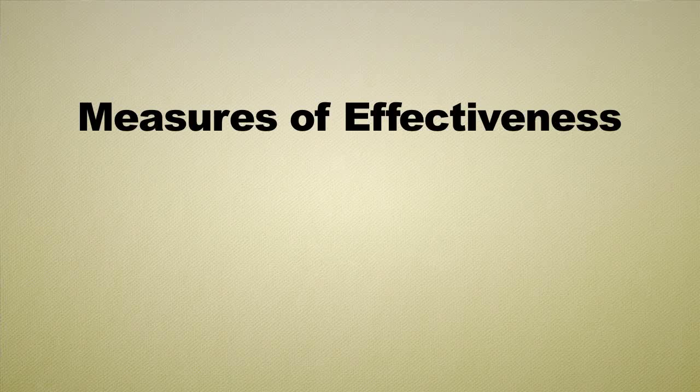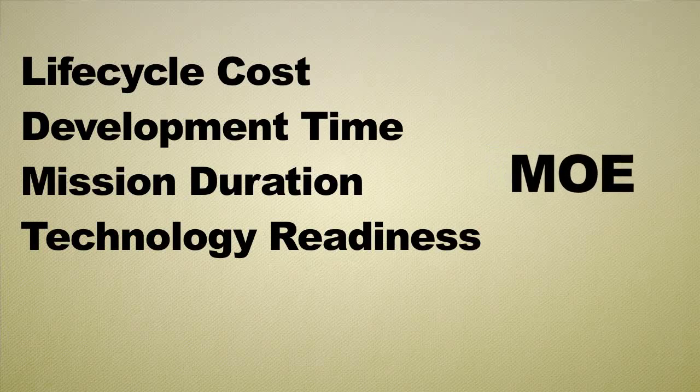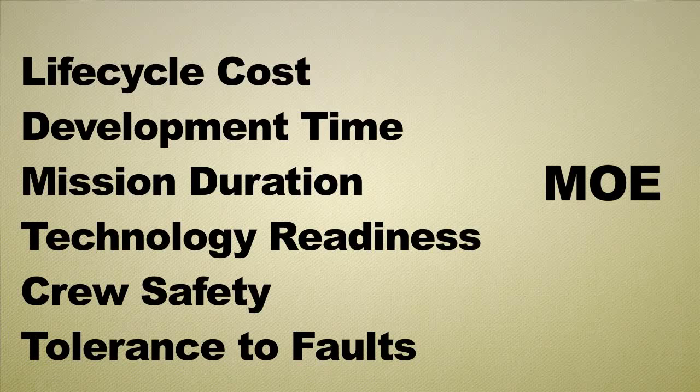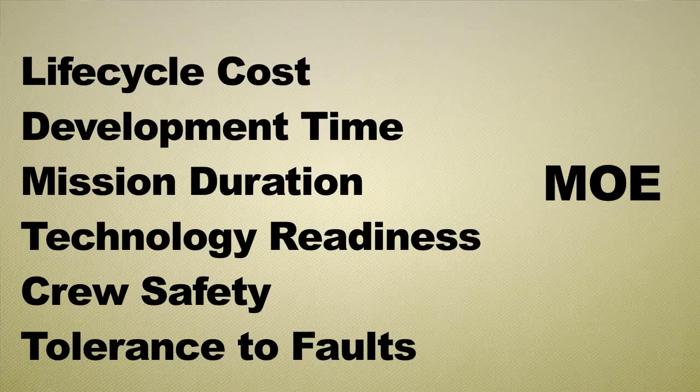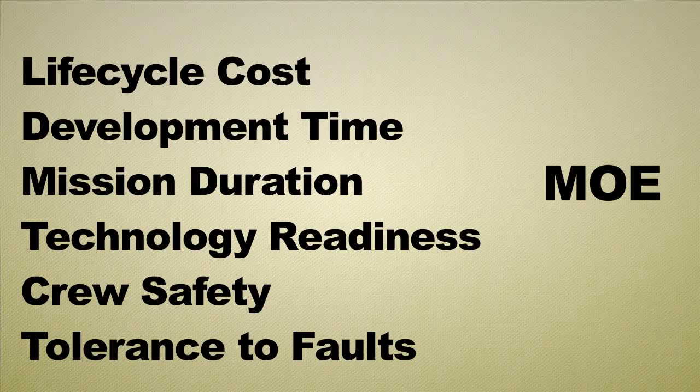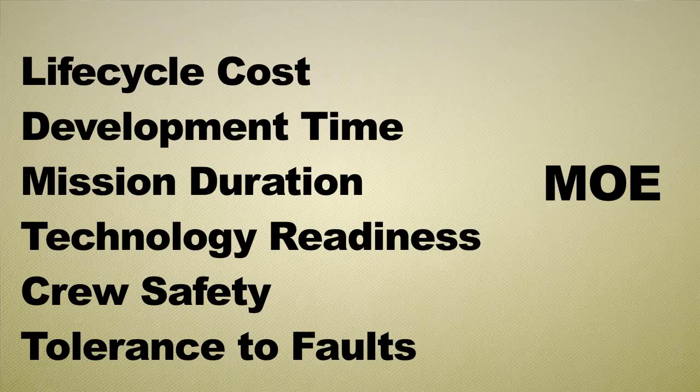A measure of effectiveness asks how effective each option is in meeting your requirements. Examples include life cycle cost — how much would it cost to pick option A versus option B — how long development will take, whether something can be bought off the shelf or needs modification, and crew safety. For a crewed spacecraft, which option is safer for the crew during the mission becomes a key measure of effectiveness.